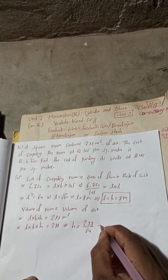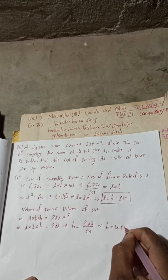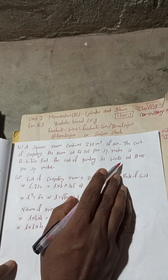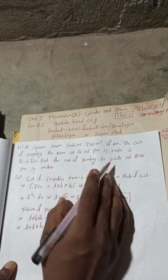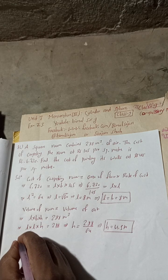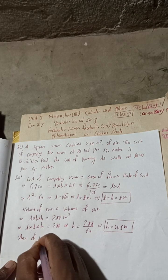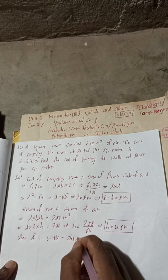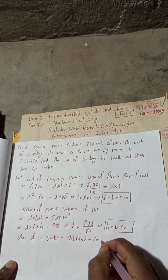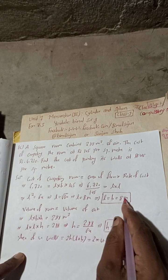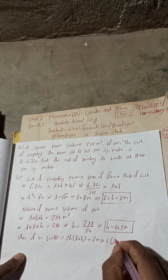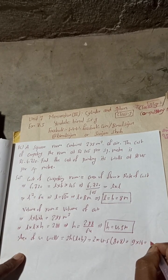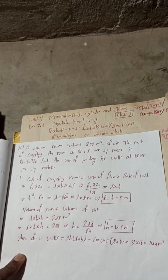We get h = 4.5 meters. Now, to find the cost of painting the walls, we first find the area of 4 walls. Area of 4 walls = 2h(l + b) = 2 × 4.5 × (8 + 8) = 9 × 16 = 144 square meters.